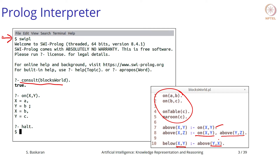When you use the consult command with blocks world, SWI-Prolog loads your program and is ready to answer queries. When you type something in, it is treated as a query. For example, querying 'is there some X which is on Y' will return all answers: X equals A and Y equals B, then X equals B and Y equals C — because we stated that A is on B and B is on C.